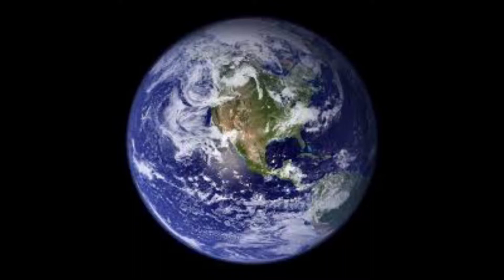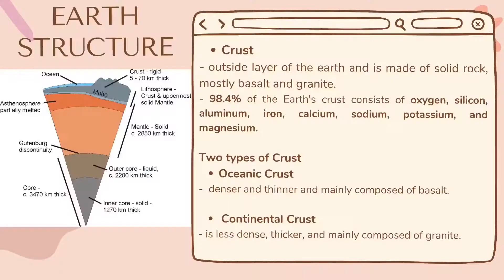Before we discuss the earth structure, let's discuss first the earth. The earth is the third planet from the sun and the fifth largest planet in the solar system in terms of size and mass. Earth is our home planet, and scientists believe earth and its moon formed around the same time as the rest of the solar system. Today, we know through radiometric dating that the earth is about 4.543 billion years old.